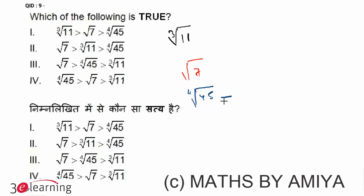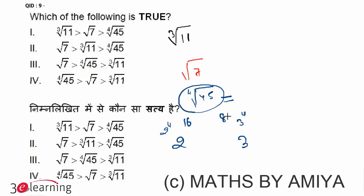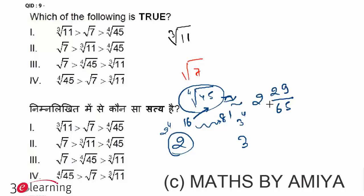There is one method where you equate all the powers and solve the question, but I am going to use interpolation, which I discussed in a session on approximation. The fourth root of 45 is between 2 and 3: 2 raised to power 4 is 16 and 3 raised to power 4 is 81. So it's more than 2 but less than 3. The gap here is 65.